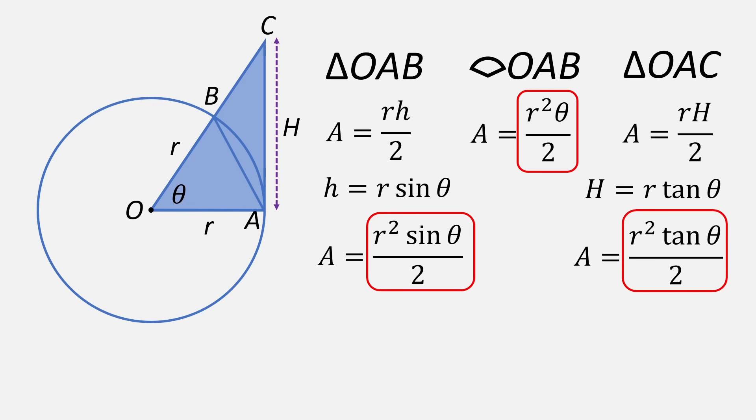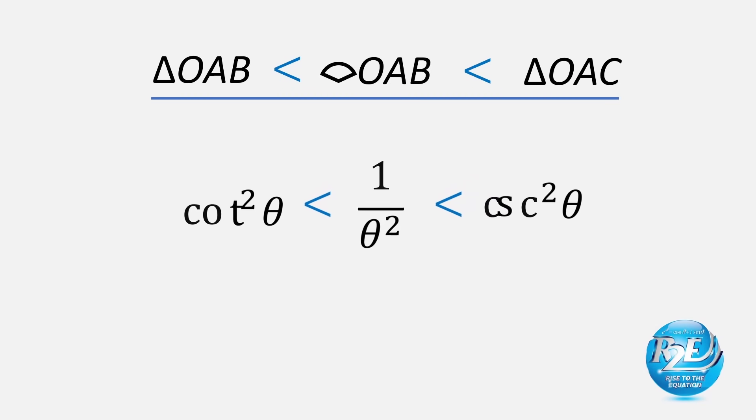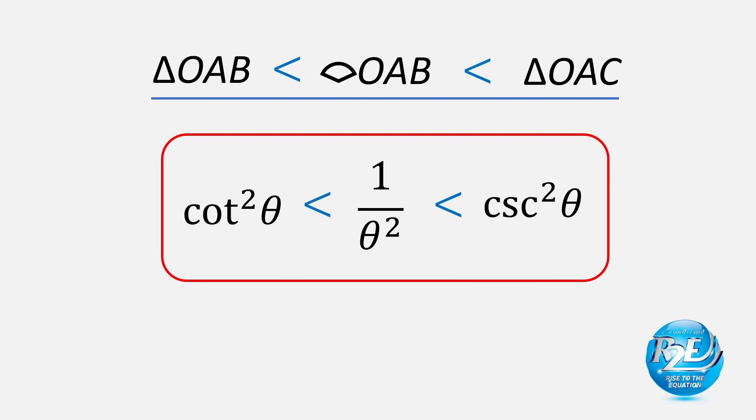Now, let's focus on those boxed areas in red. Dividing through by R squared over 2, we get this nifty trig inequality, which is valid for theta between 0 and pi over 2. Finally, if we square the reciprocals, we arrive at our desired inequality.